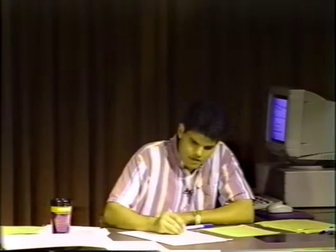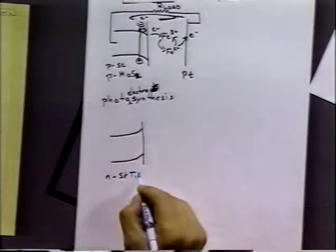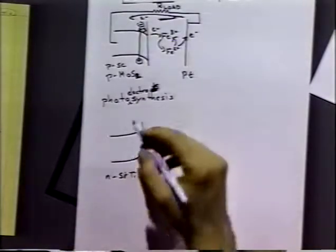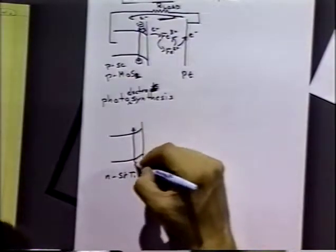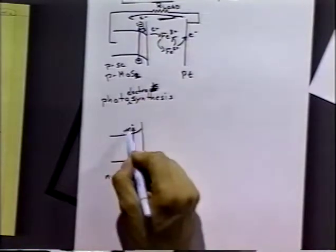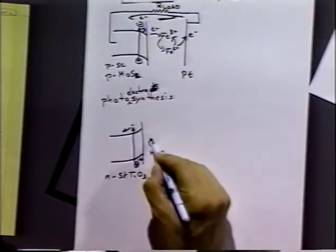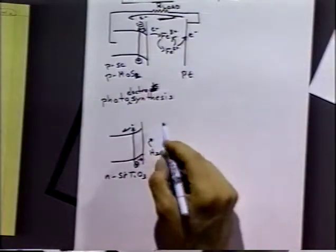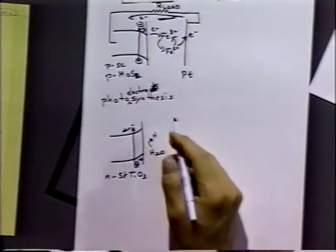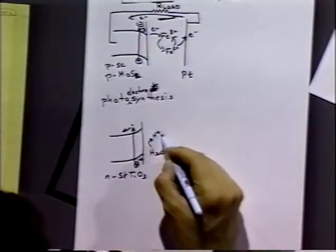The idea here would be we'd have a semiconductor material, in this case an N-type material, for the example, strontium titanium oxide. We get a photo promotion of the electron. In this case, the holes will go to the surface. At that point, the hole will act to oxidize water, producing hydrogen and oxygen.